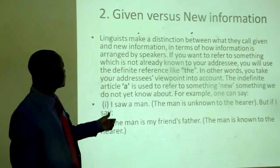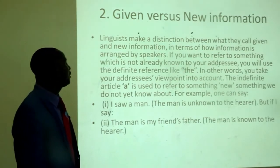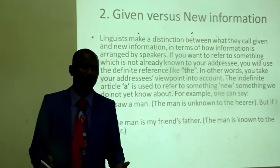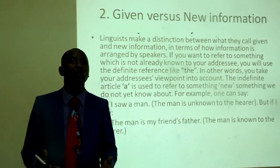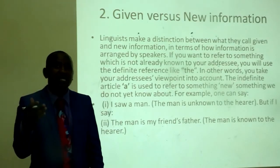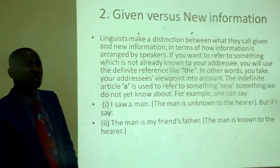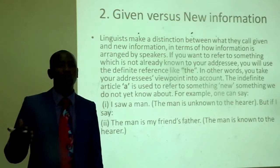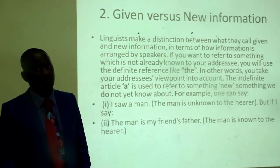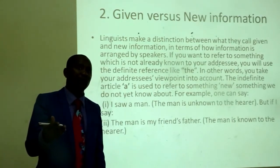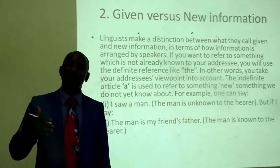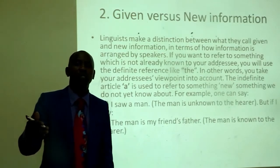Let us look at given versus new information. Linguists make a distinction between what they call given and new information, in terms of how information is arranged by speakers. If you want to refer to something which is not already known to your addressee, you will use the indefinite reference. In other words, you take your addressee's viewpoint into account. The indefinite article 'a' is used to refer to something new, something we do not yet know about. For example, one can say 'I saw a man' — that means the man is unknown to the hearer. But if I say 'the man is my friend's father', that means the man is known to the hearer.